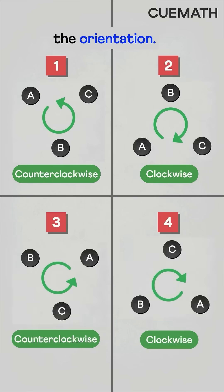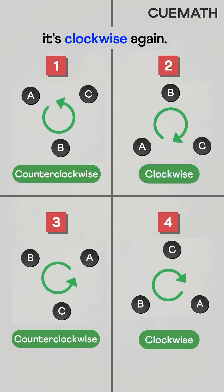So each move flips the orientation. After an odd number of moves, it's counterclockwise. After an even number, it's clockwise again.